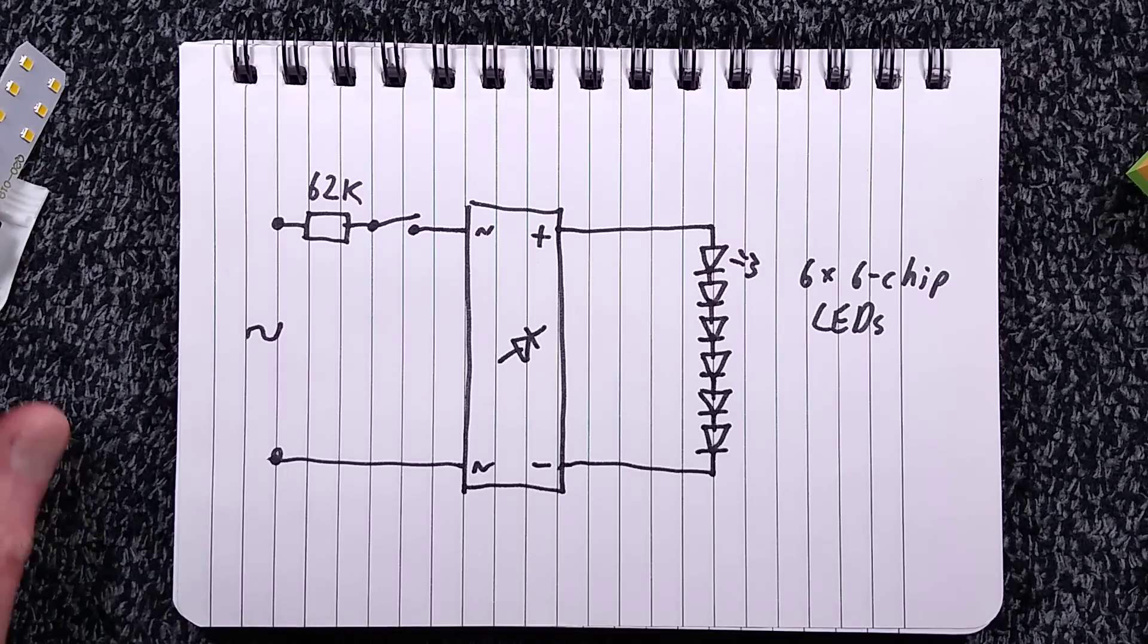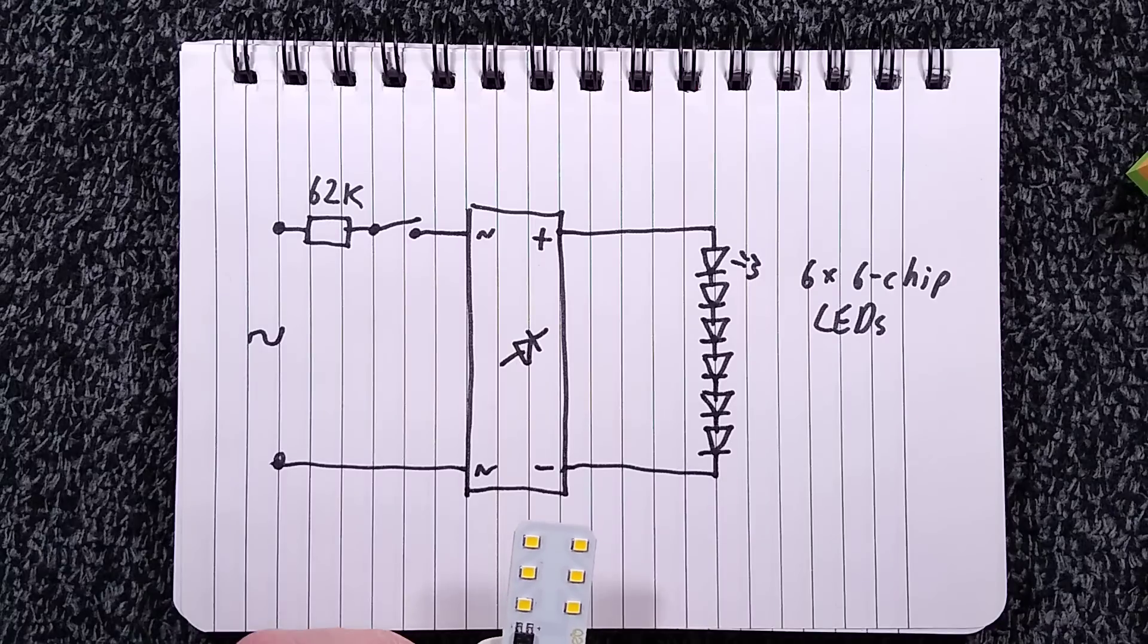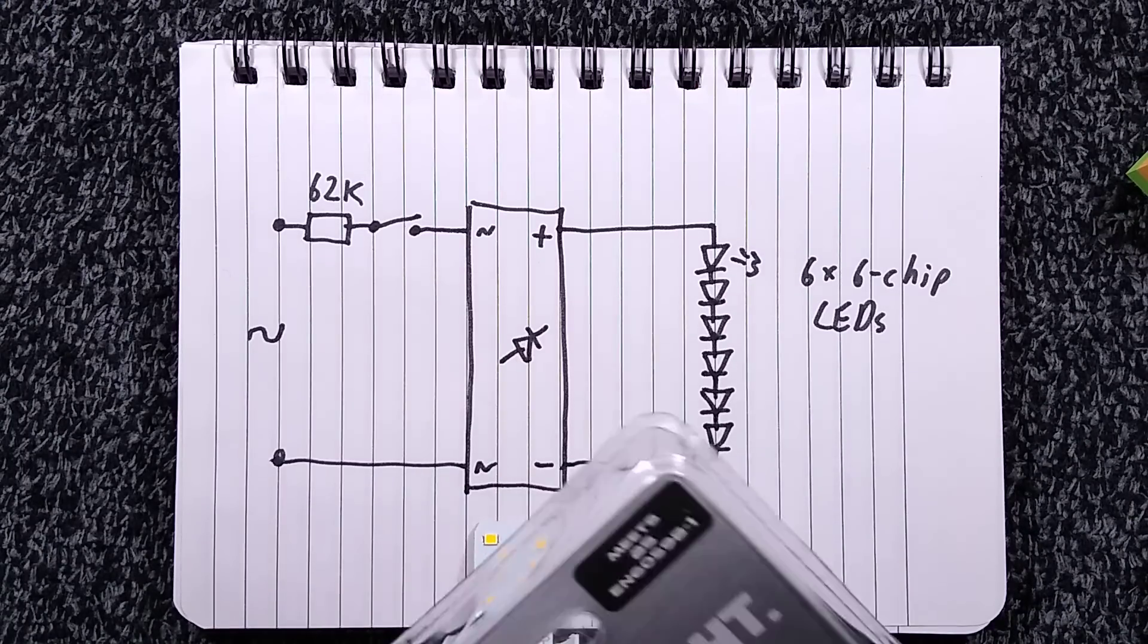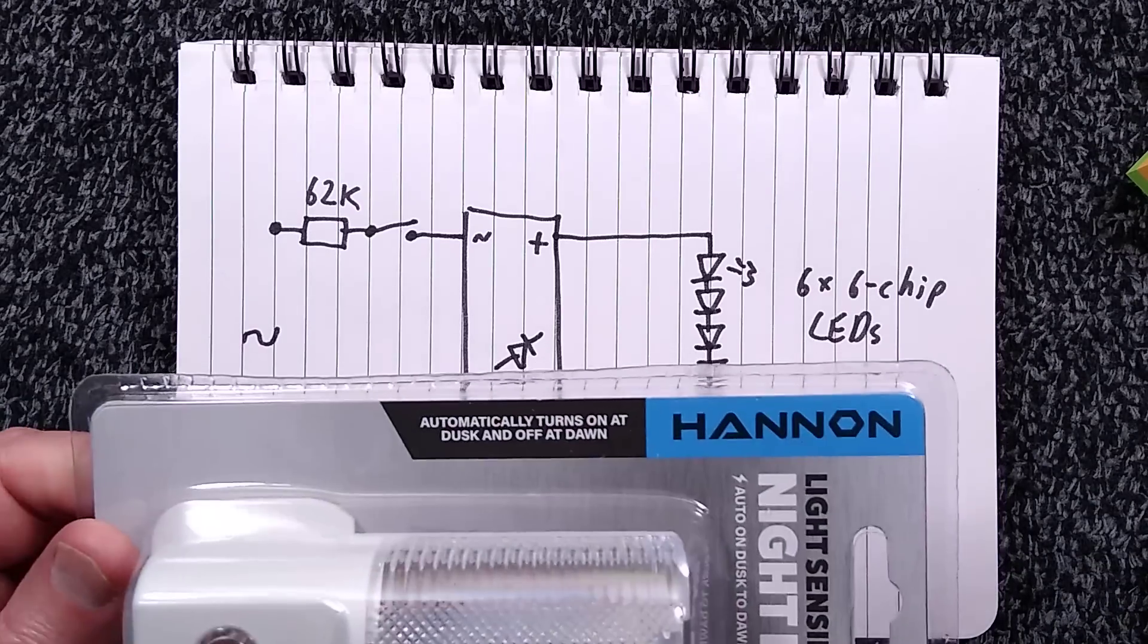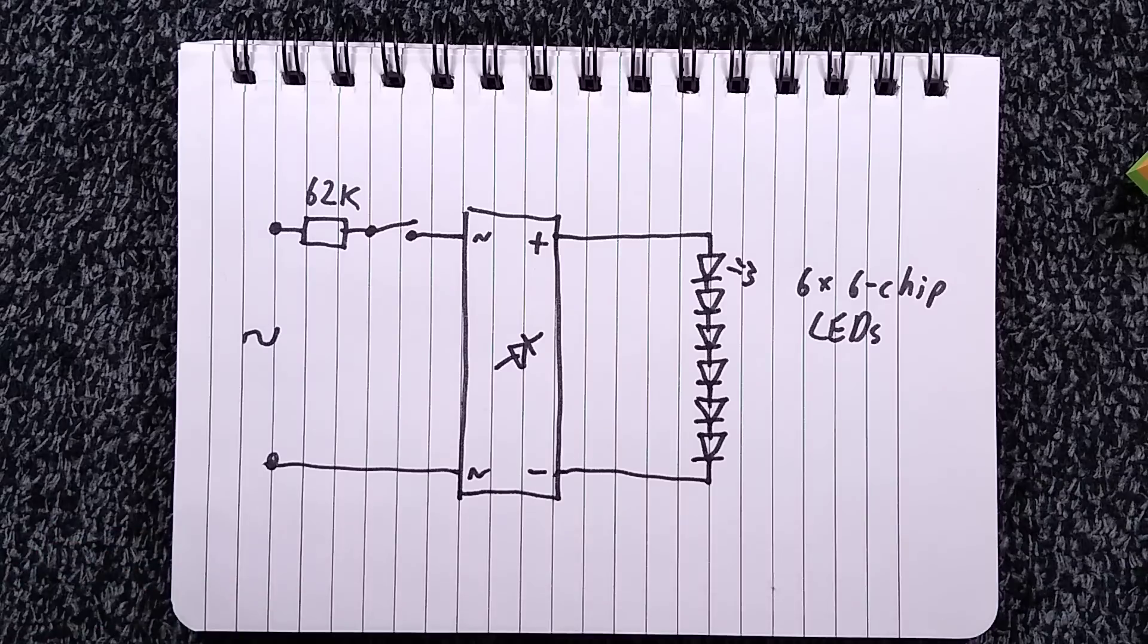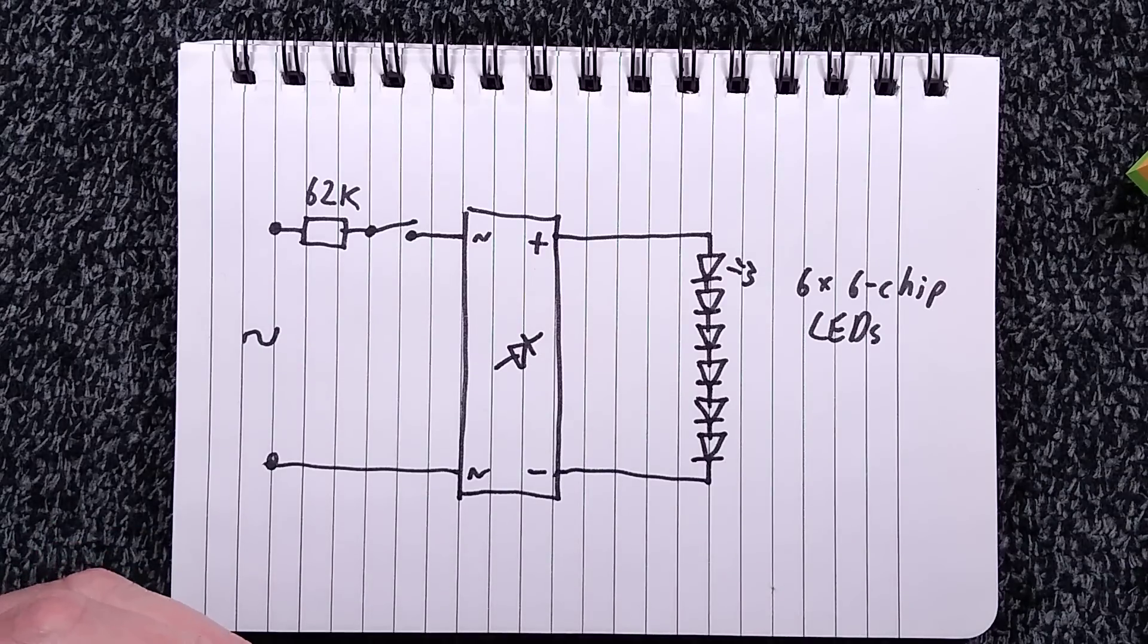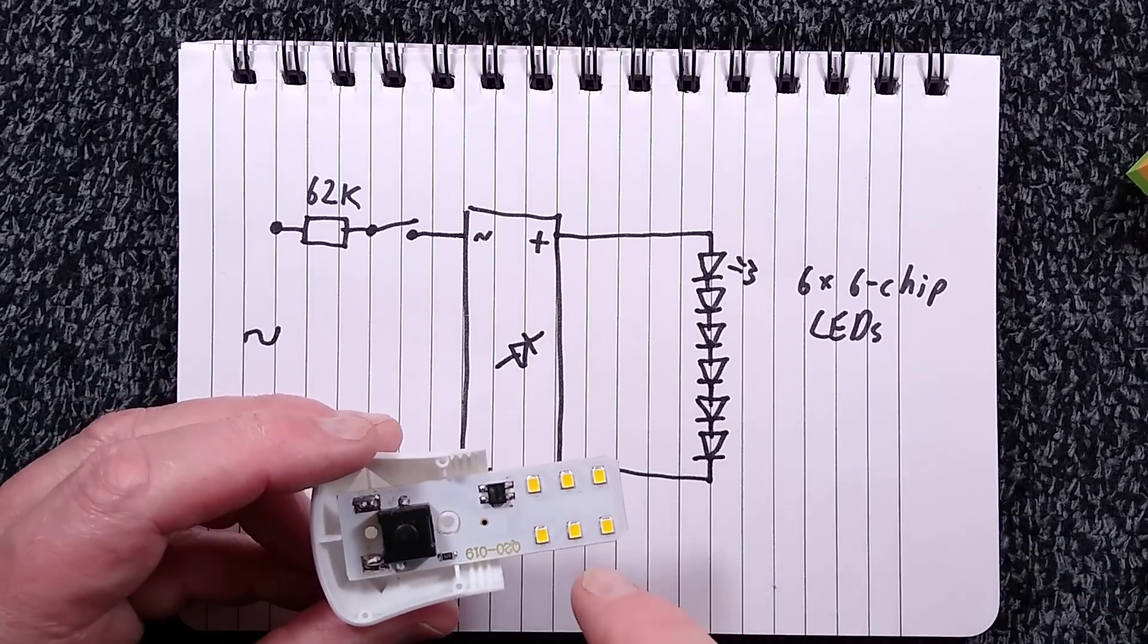But I mean, I suppose one redeeming feature, they have used the multi-chip LEDs. And the good thing about that is that the Poundland equivalent uses three LEDs, but they're just single-chip LEDs in here. So, it's kind of less efficient. A lot more is being dissipated across the resistors, but the resistors are actually better rated than this one.